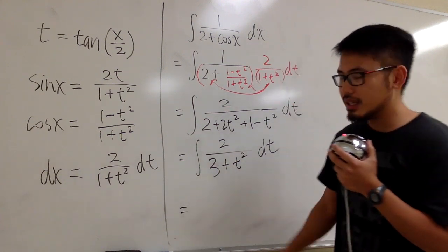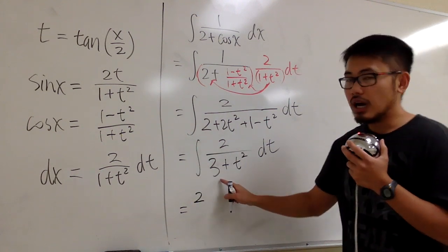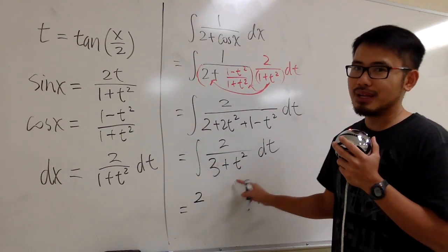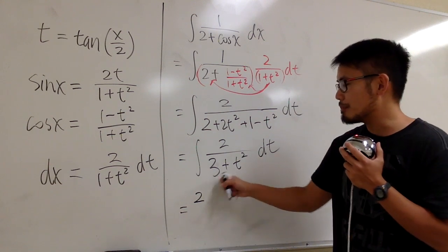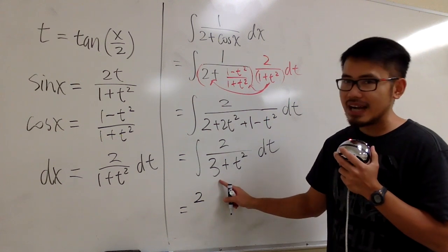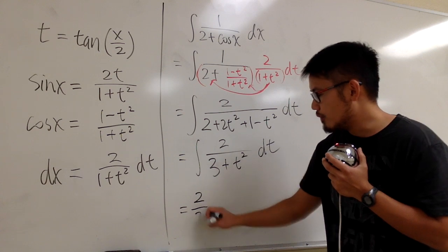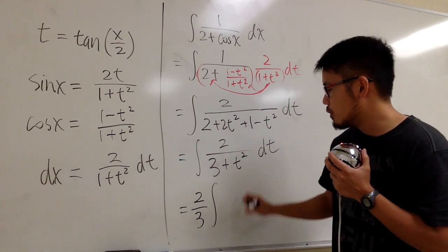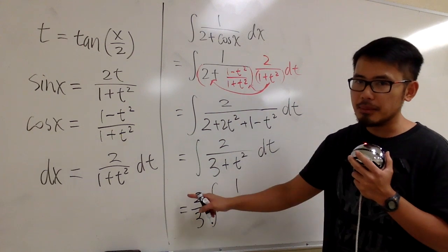Sure, but this is something that we have to do first. Let's take the 2 out, so we have the 2 in the front. And then, I don't know how to integrate 3 plus t squared in the denominator. I know how to integrate if we have 1 plus something squared in the denominator, right? So let me also factor out the 3, okay? So I'm going to write this as 2 over 3, integral 1 over,